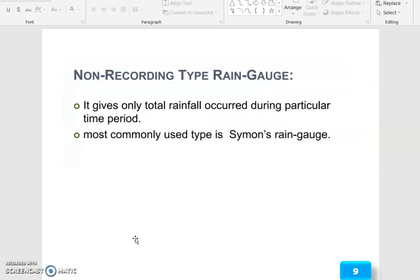Non-recording type rain gauges give only rainfall occurred during particular time periods. The most commonly used type is Symon's rain gauge.